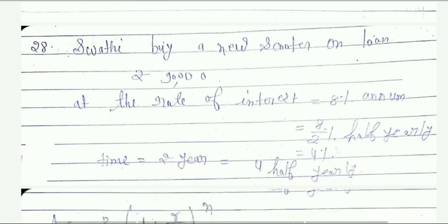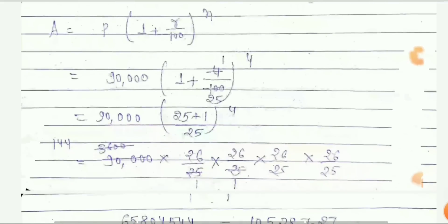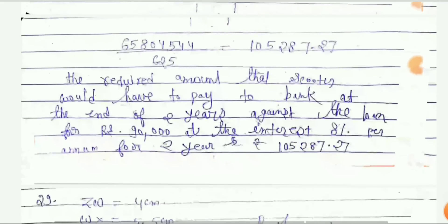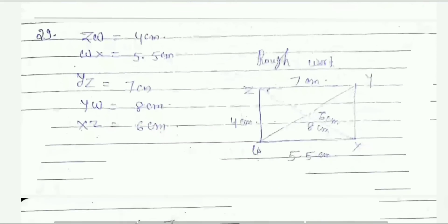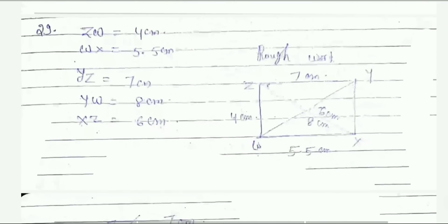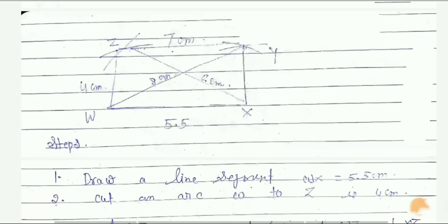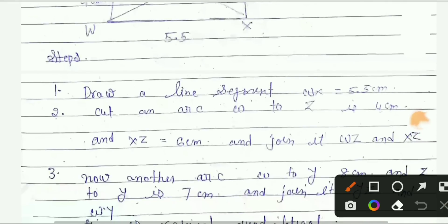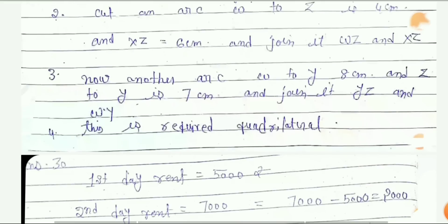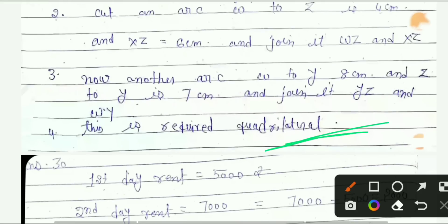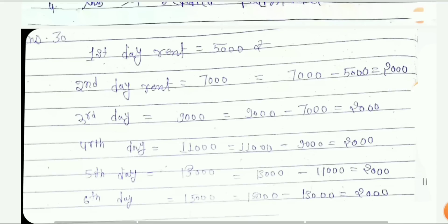Next you can see question 29 answer — step 1, step 2, step 3, and step 4. Then your question 30 answer. This is your last answer, so complete this question paper because this is a very important AP 8th class Maths question paper.